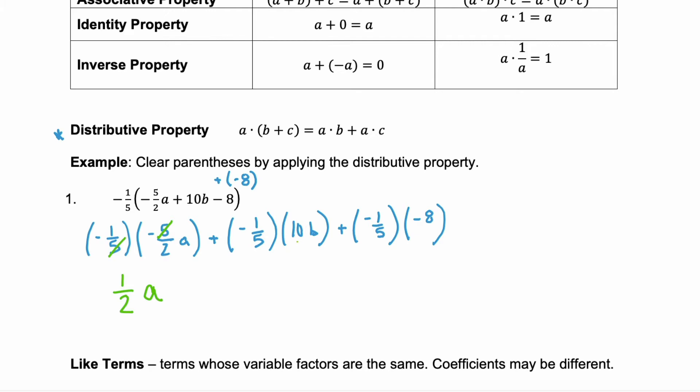In the second term 10 is equivalent to 10 over 1. The 5 in the denominator and the 10 in the numerator have 5 in common which leaves a 2 behind in the numerator. And we get negative 2b.